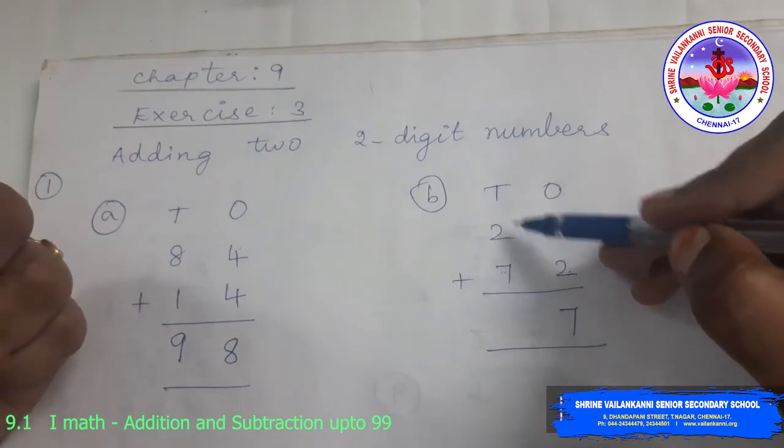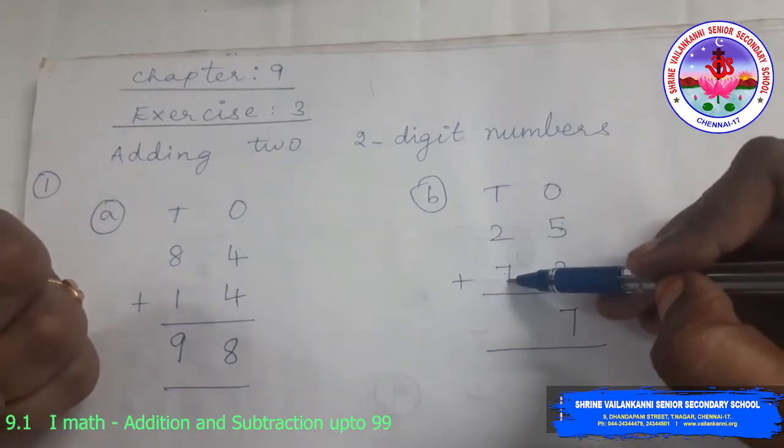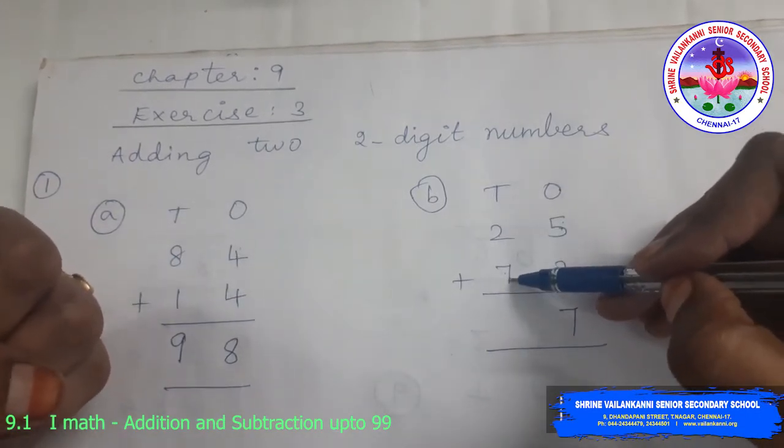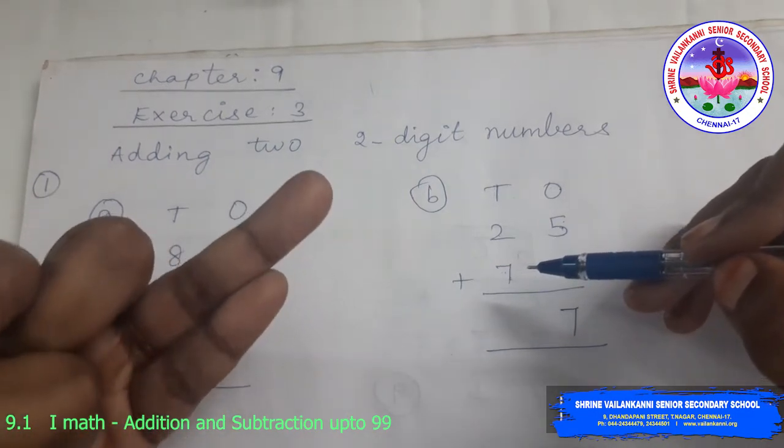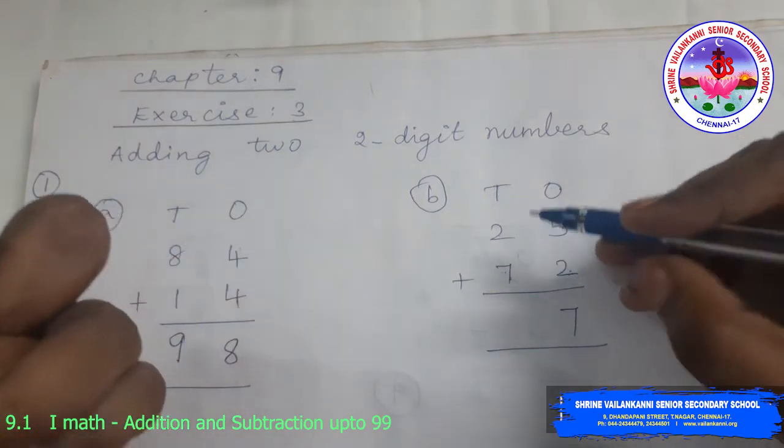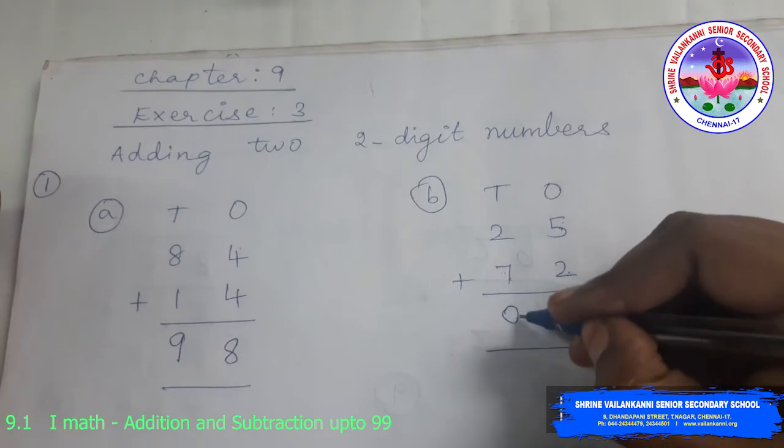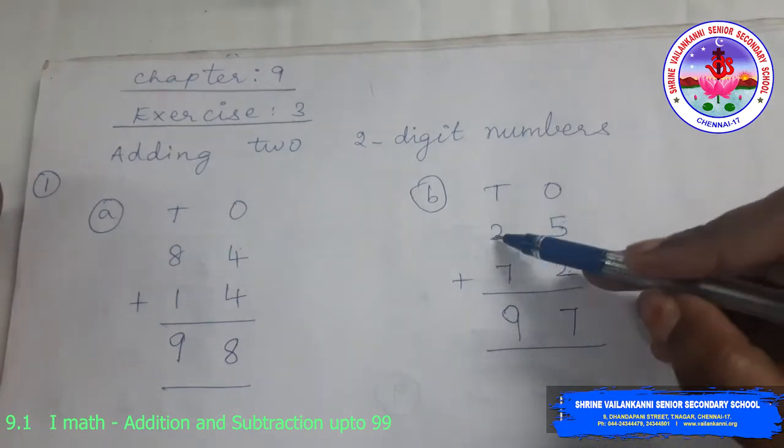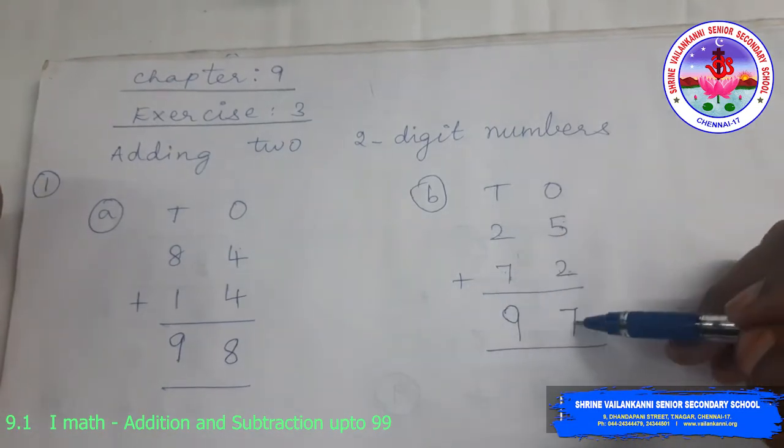Now, 10s place. 2 10s plus 7 10s is, you can keep the 7 in your mind and 2 in your finger. After 7, 8, 9. 9 10s. So you get 25 plus 72 is 97. That is 9 10s and 7 1s.